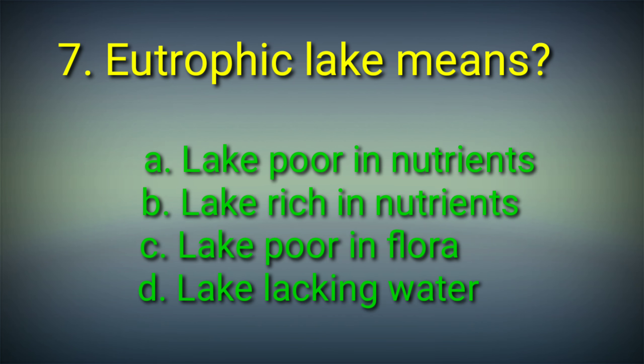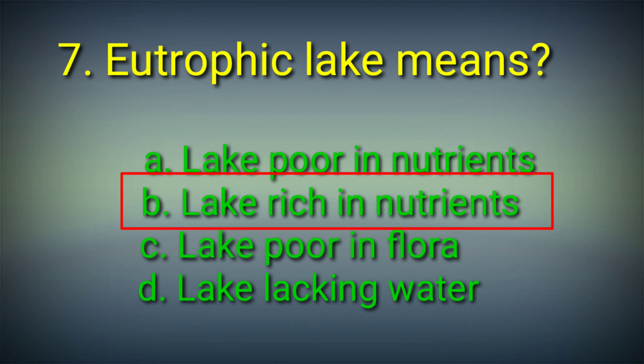Seventh question: Eutrophic lake means — Options: A. Lake poor in nutrients, B. Lake rich in nutrients, C. Lake poor in flora, D. Lake lacking water. Answer: Option B. Lake rich in nutrients. Eutrophic lake means a lake rich in nutrients.